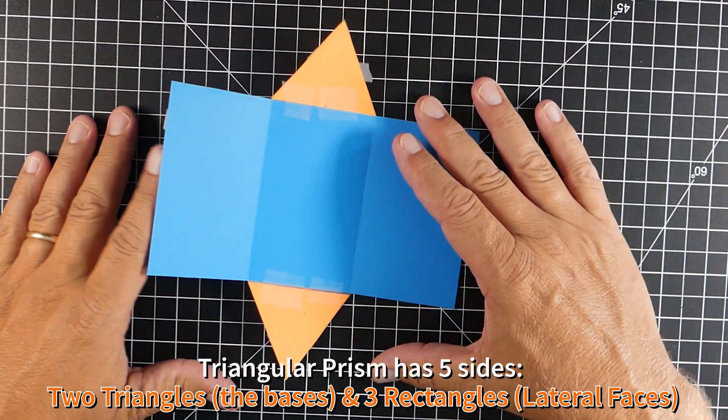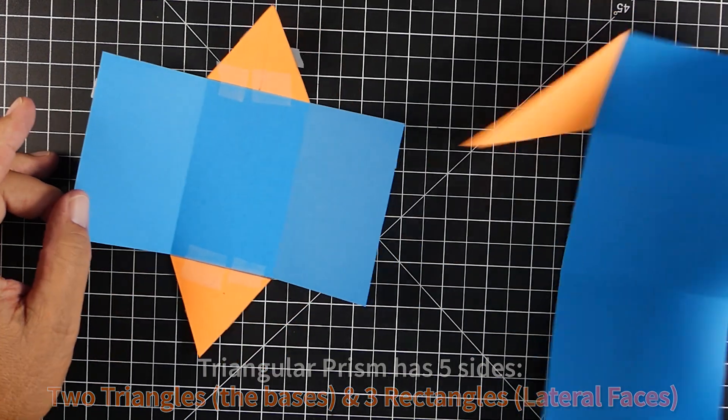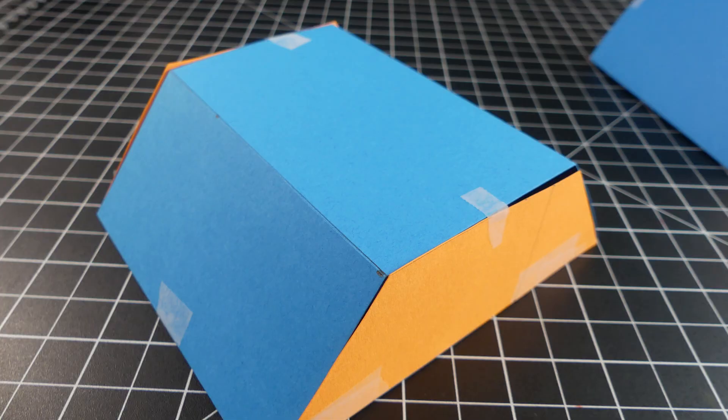Now this has five sides, just like our right triangular prism did. So it's the exact same. Matter of fact, here's the other triangular prism, and they have the same five sides.